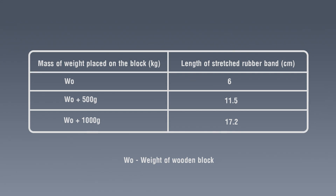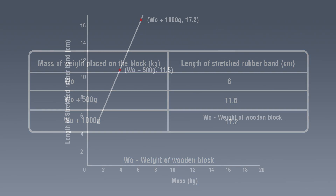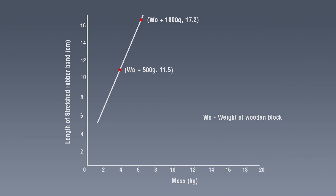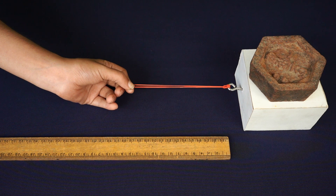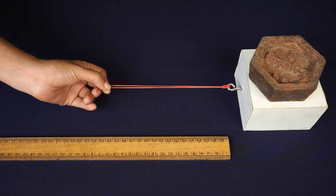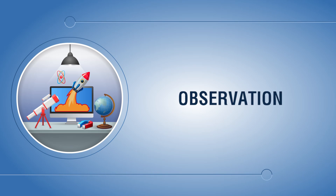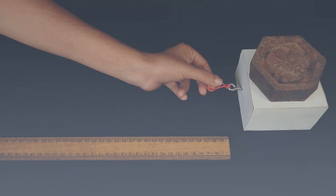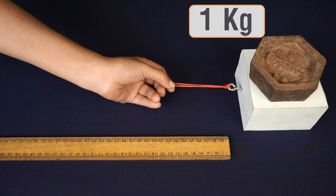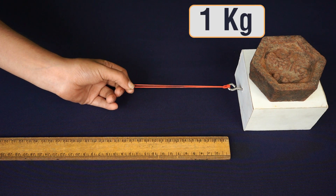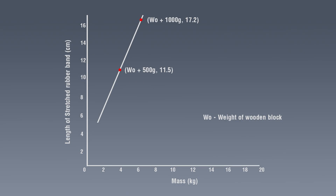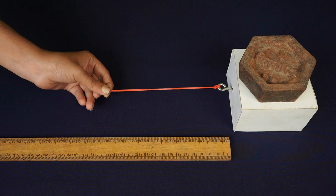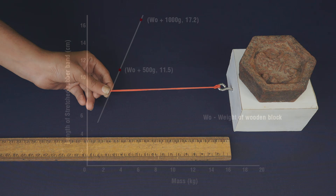Note your observations in a table and plot a graph between the mass of weight placed on the block and the length of the stretched rubber band. The length of the stretched rubber band increases as we increase the weight on the wooden block, and the plotted graph gives a straight line.